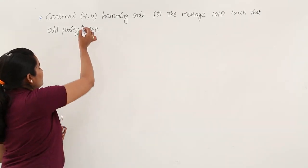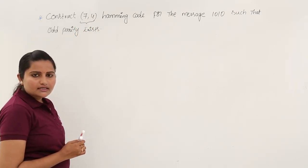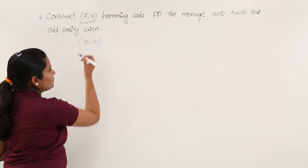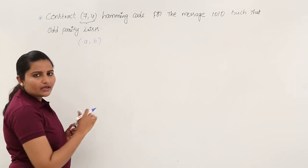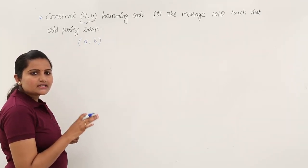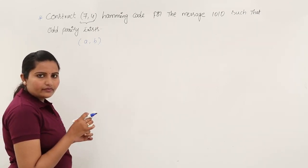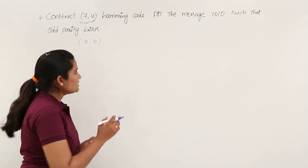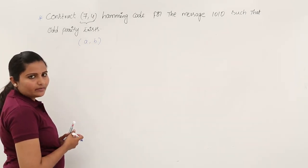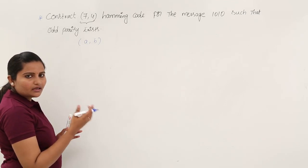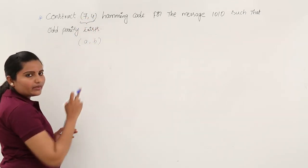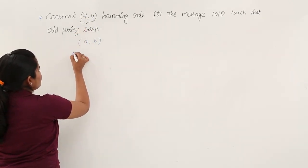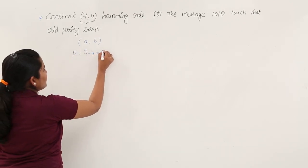The code notation defines this. For a given A,B Hamming code, A represents the length of the Hamming code and B represents the number of message bits. The remaining bits — the check bits or parity bits — are found by subtracting A minus B. In this example, parity bits = 7 minus 4, giving us 3 parity bits.